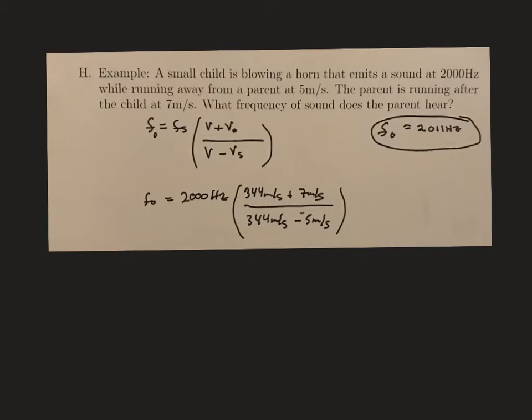When we go through this problem, the source, which is the child, is emitting a sound at 2,000 Hertz, so that's my frequency of the source. Because we're not specified any information about temperature or different types of gases, we're going to use our assumed 344 meters per second for the speed of sound.